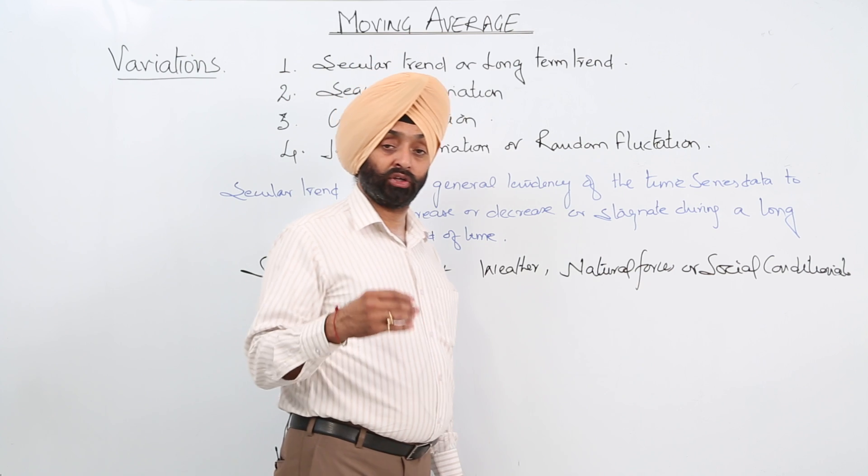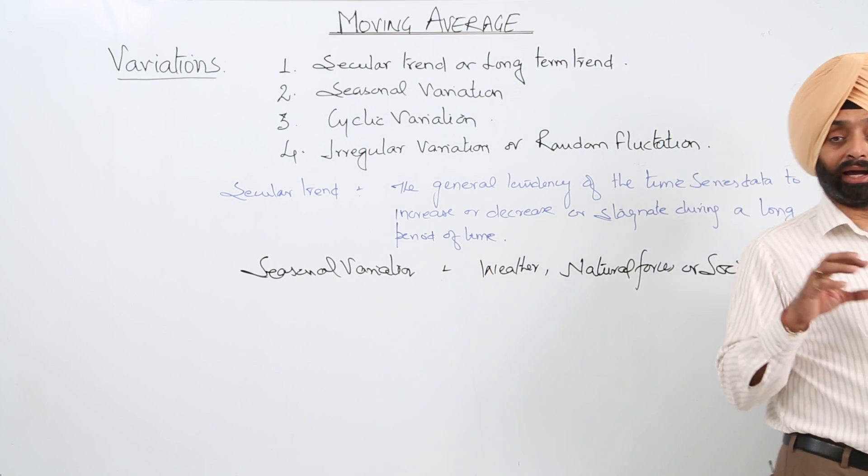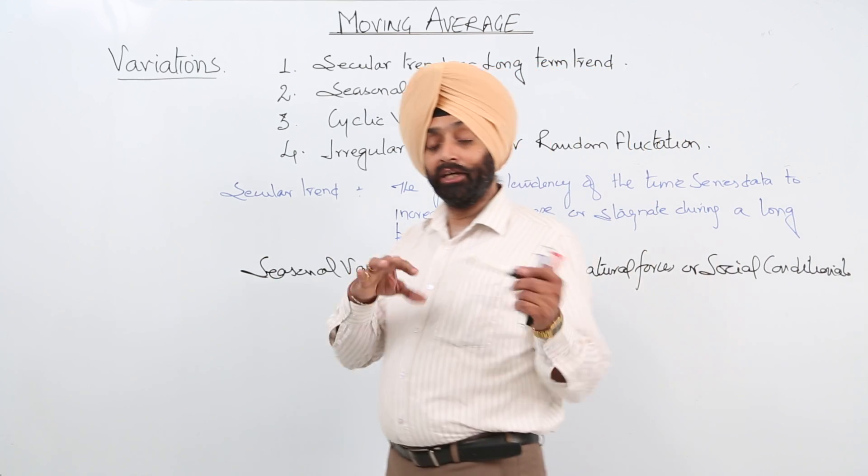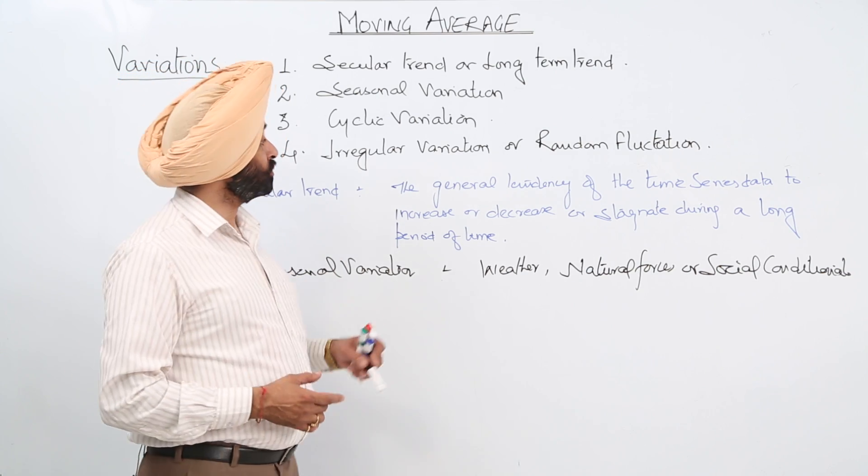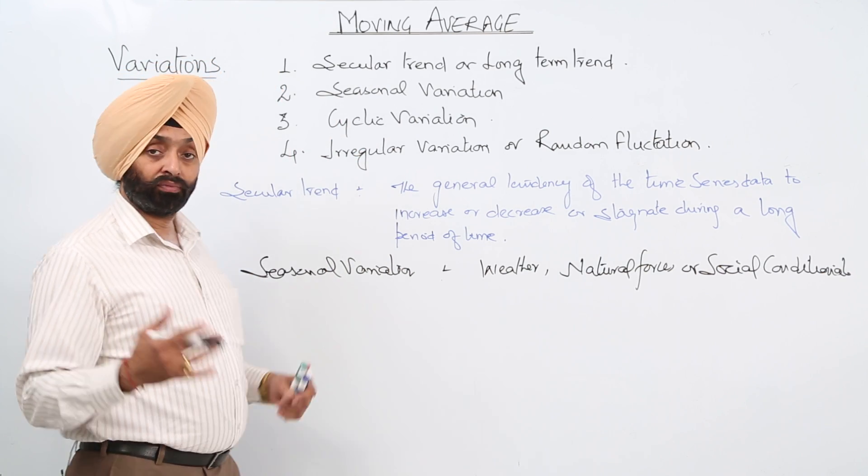Now one more example can be for irregular variation. Hike in the crude oil and hike or decrease in the crude oil, and same hike or decrease - that is the irregular part for the price of the petrol or a diesel.